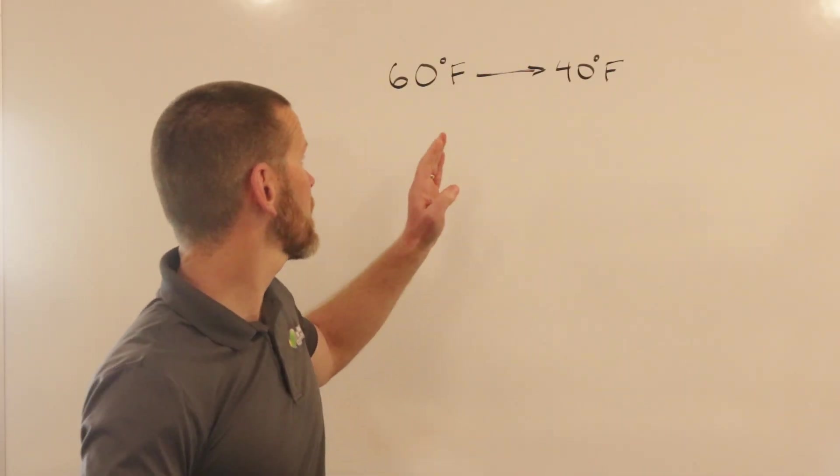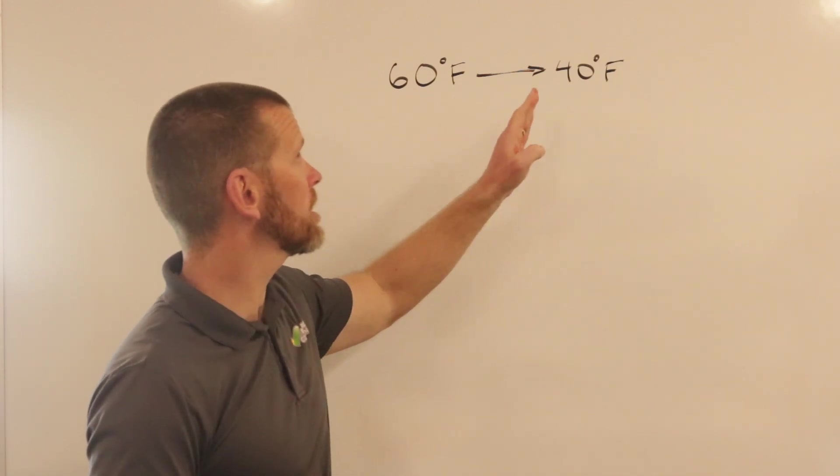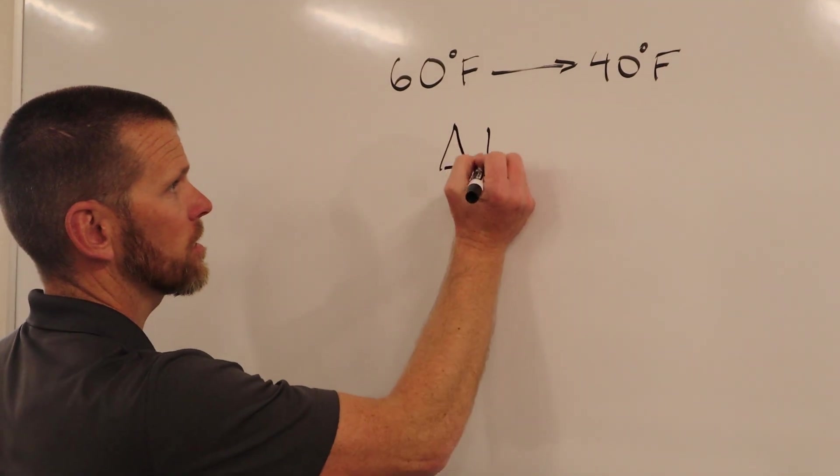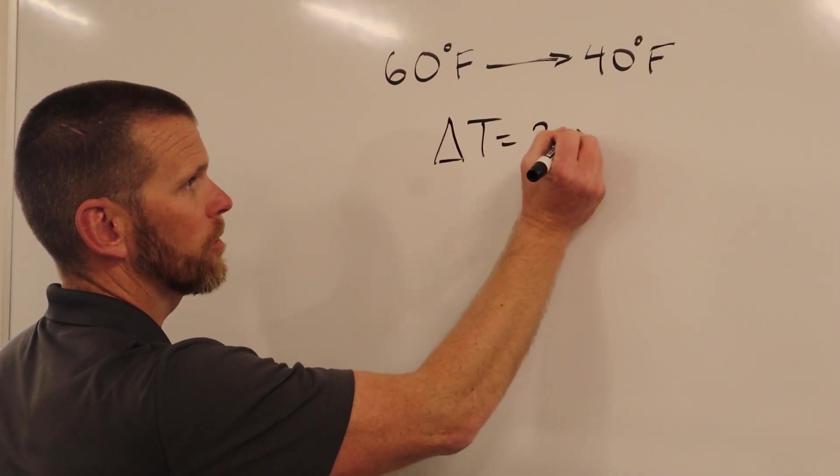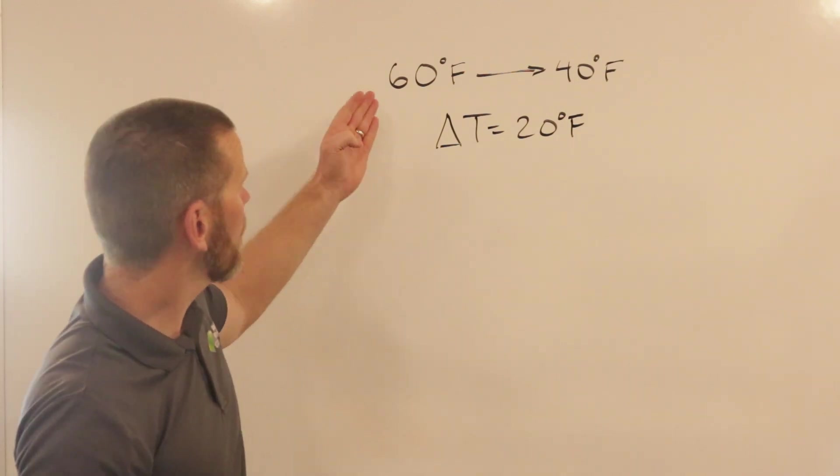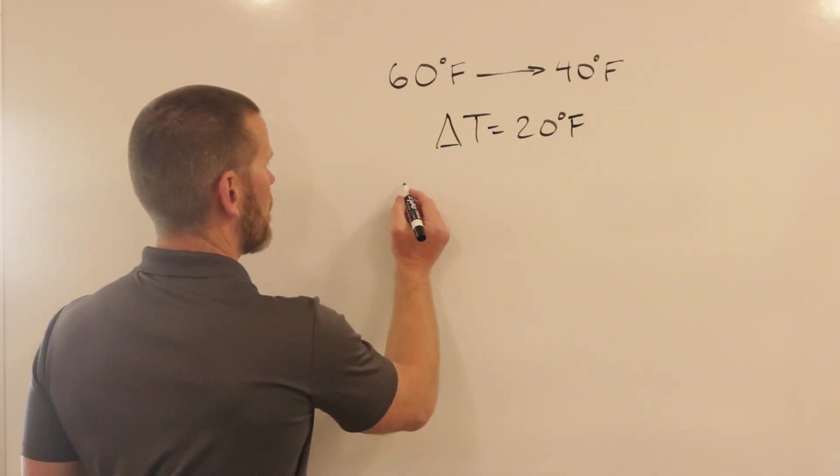Say we have water and it changes temperature from 60 degrees down to 40 degrees. The change in temperature of this is obviously 20 degrees Fahrenheit, right? 60 minus 40 equals 20.